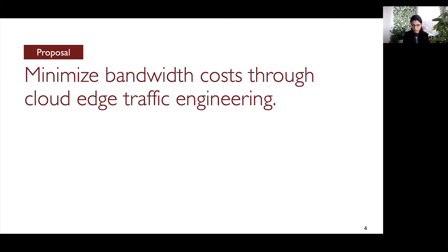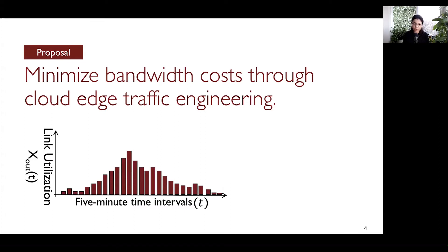So here's our proposal: we want to leverage cloud edge traffic engineering to minimize the cost of inter-domain bandwidth for cloud providers. By edge traffic engineering, I mean the process of allocating traffic to peer links between the cloud and other networks on the internet. If you recall the graph from the previous slide, edge traffic engineering would basically influence the height of the bars in the graph of link utilizations.